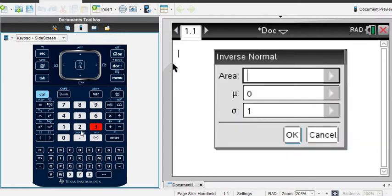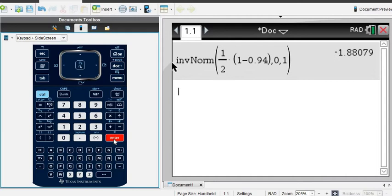So I will go over that again, and I'll show you the other way. So you have the option of either putting in 1/2(1 minus 0.94), and then close your parentheses and select OK. And it gives you negative 1.88079.